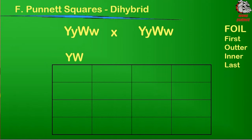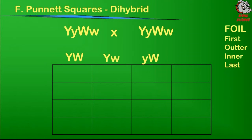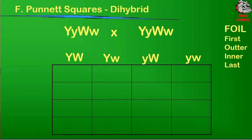The next is outer — you take the outer two genes, which are capital Y and little w, and those go across the top of the second column. The inner two genes are little y and big W, which go at the top of the next column. And the last genes are little y and little w, which go across the top of the final column.